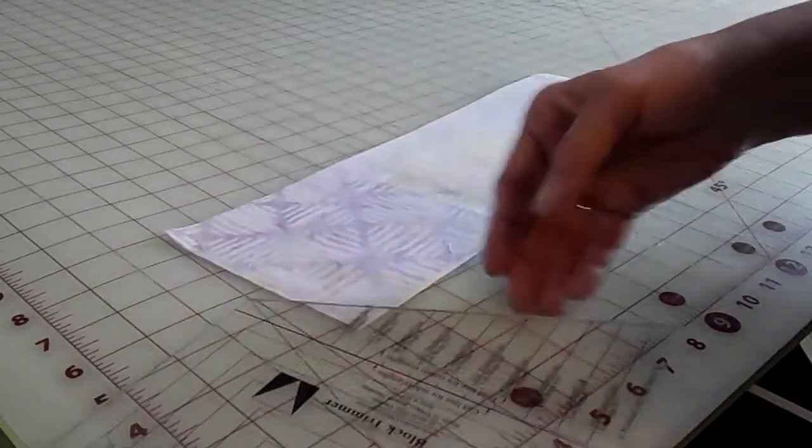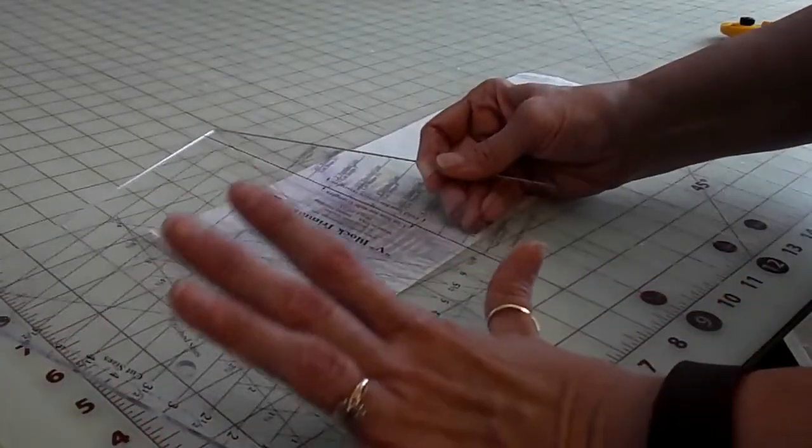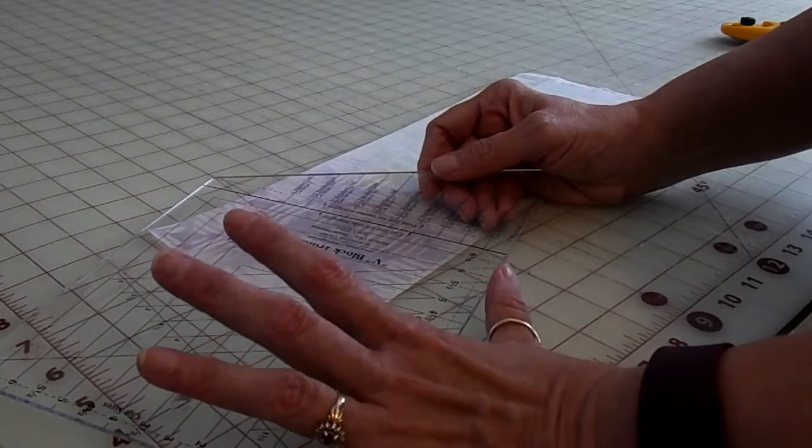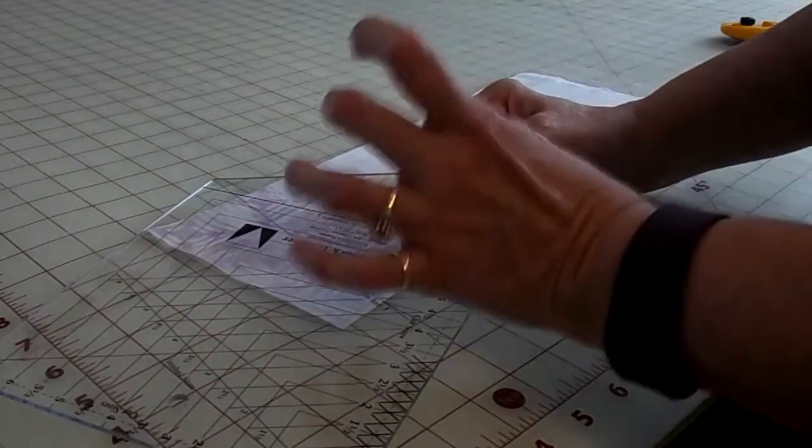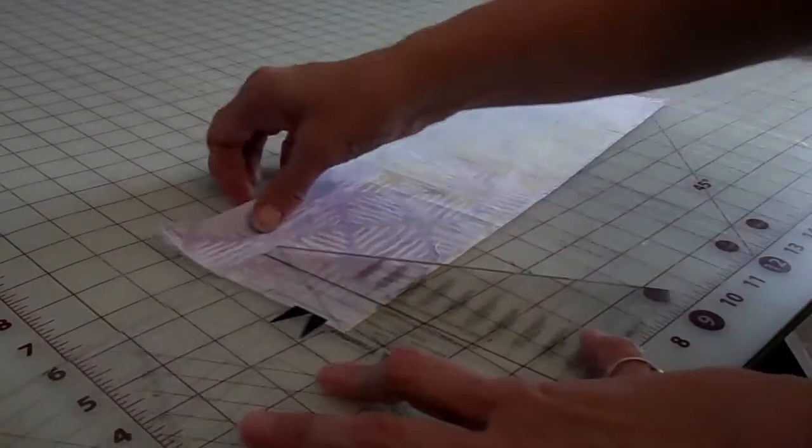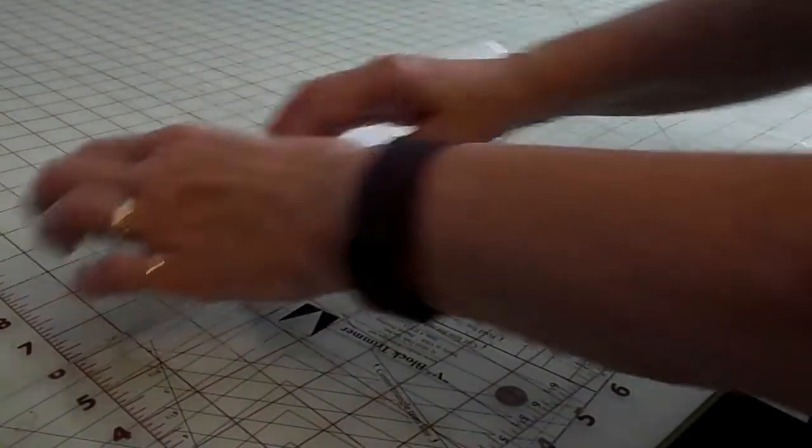We are using the Magic Studio 180 block trimmer because this is the best way to get a beautiful point without it being lopsided or hanging off the side, and it's really easy to use.